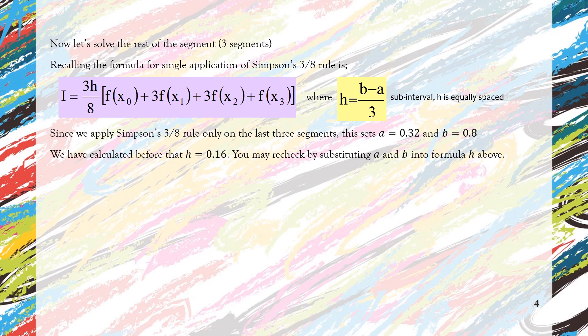You can recheck the size of h by substituting the value of a and b into the formula of h above, and you should get the same value of 0.16.